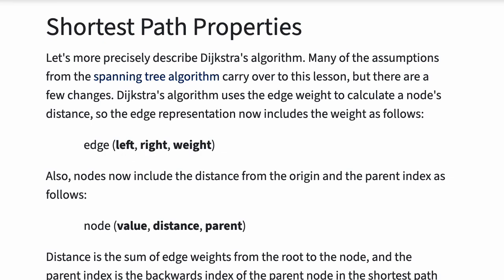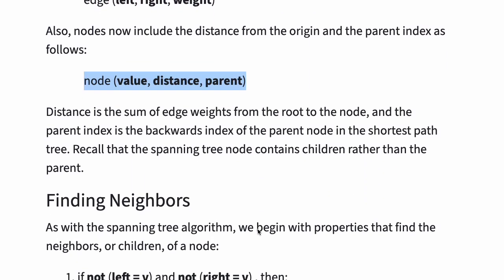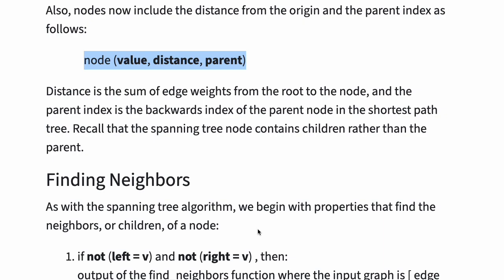Let's more precisely describe Dijkstra's algorithm. Many of the assumptions from the spanning tree algorithm carry over to this lesson, but there are a few changes. Dijkstra's algorithm uses the edge weight to calculate a node's distance, so the edge representation now includes the weight. Nodes now include the distance from the origin and the parent index. Distance is the sum of edge weights from the root to the node, and the parent index is the backwards index of the parent node in the shortest path tree.